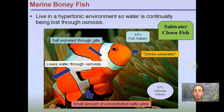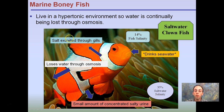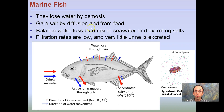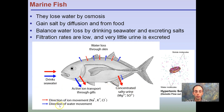Now let's look at marine bony fish, or saltwater fish. They live in a hypertonic environment, so water is continuously being lost through osmosis. Our fish still has 14% salinity, but the water is 35% salinity. It does drink seawater, and salt is excreted through the gills, as well as small amounts of concentrated salty urine. They lose water by osmosis, gain salt by diffusion from food, balance water loss by drinking seawater and excreting salts, and filtration rates are low — very little urine is excreted. If nothing happened, they would shrivel up. You can see the direction of movement of water and ions, with a lot being lost through the gills and salty urine, and water through the skin also being exchanged.